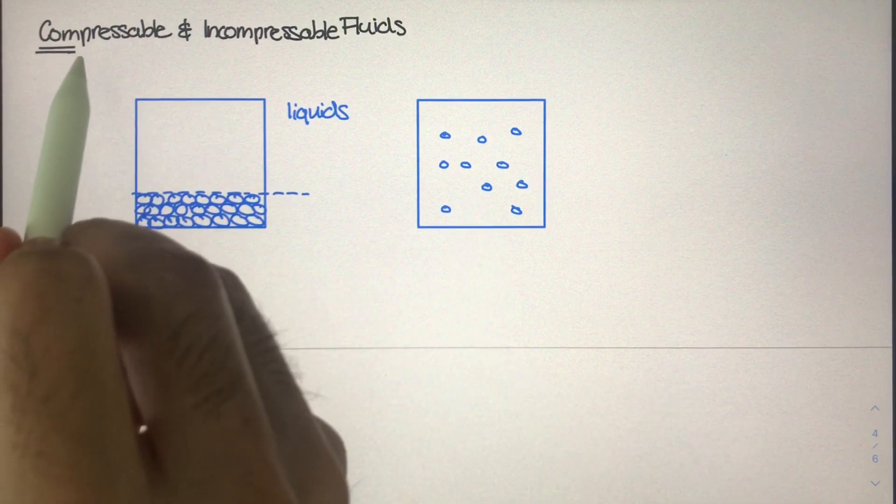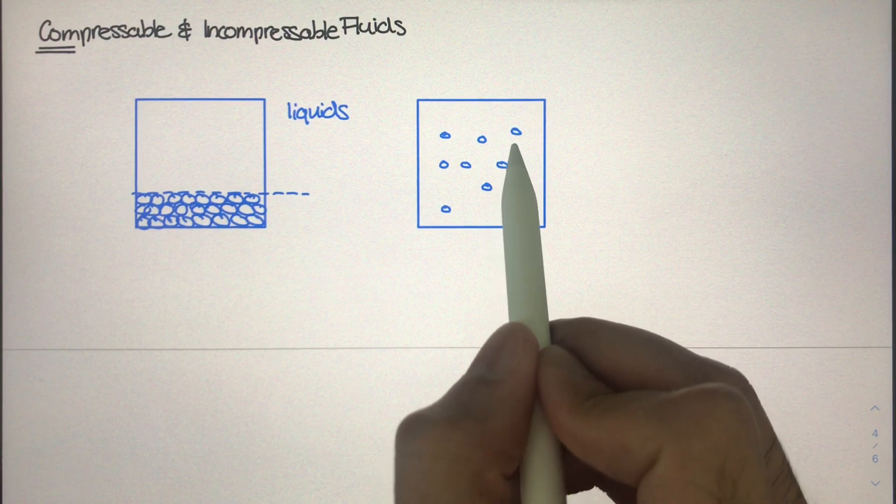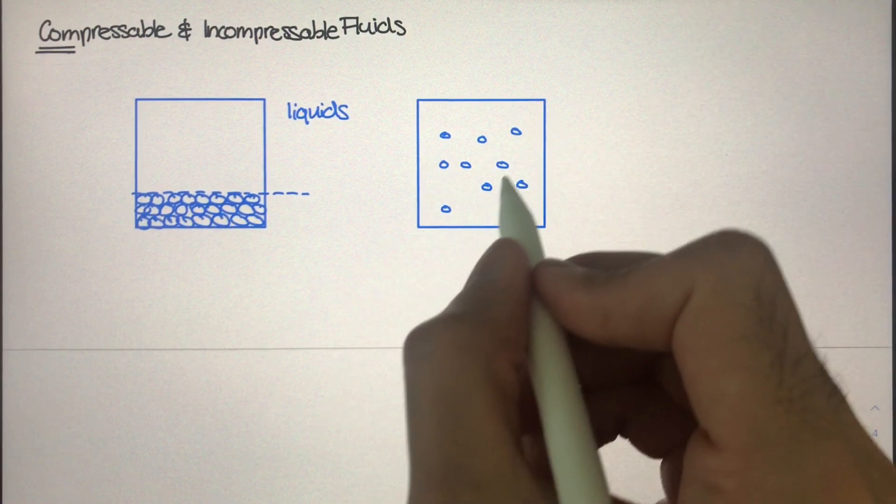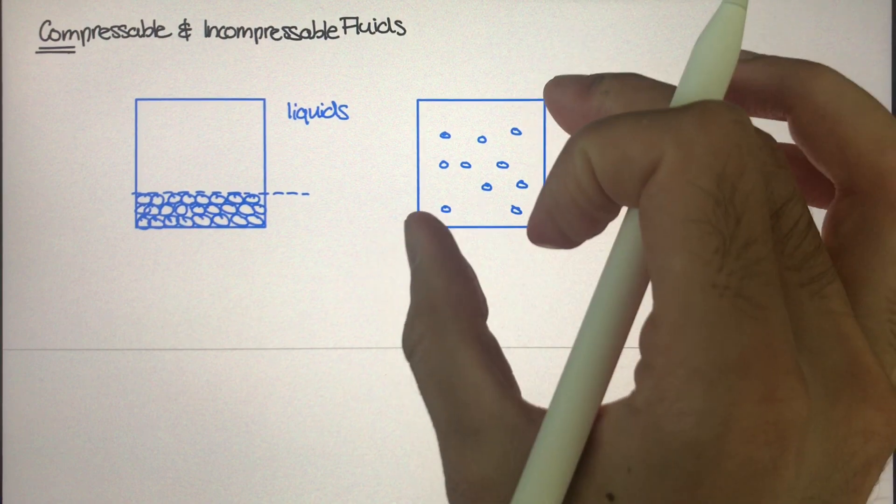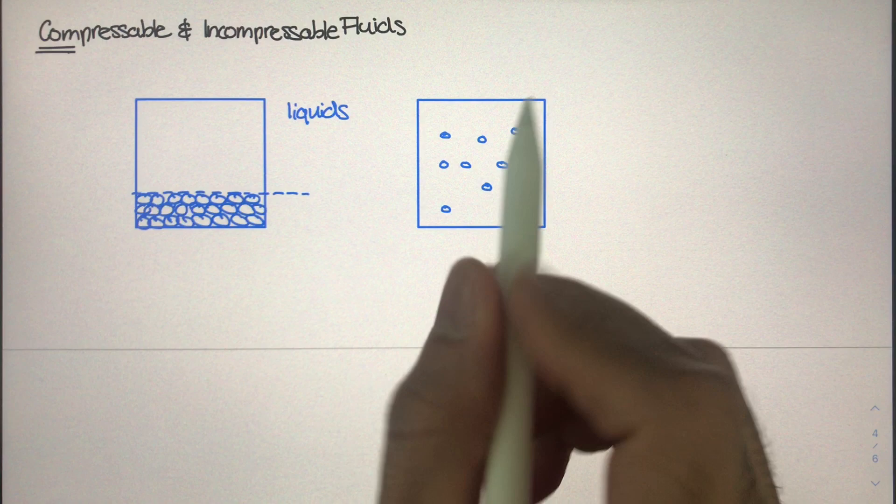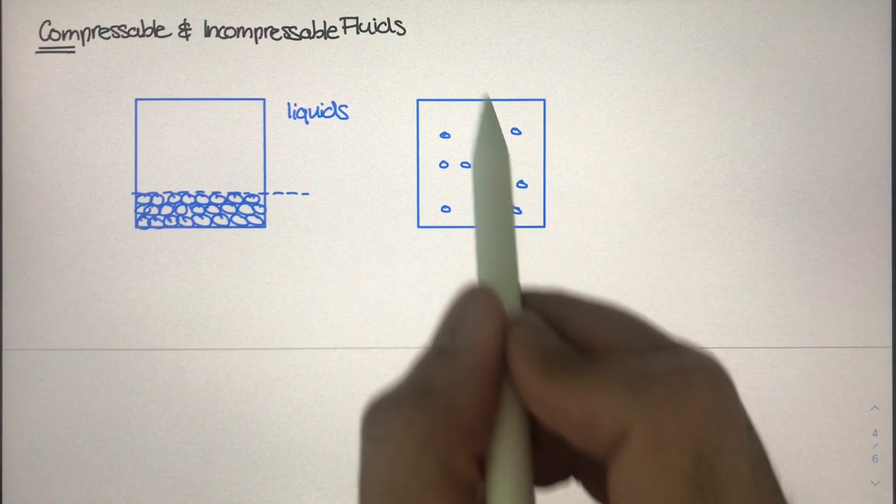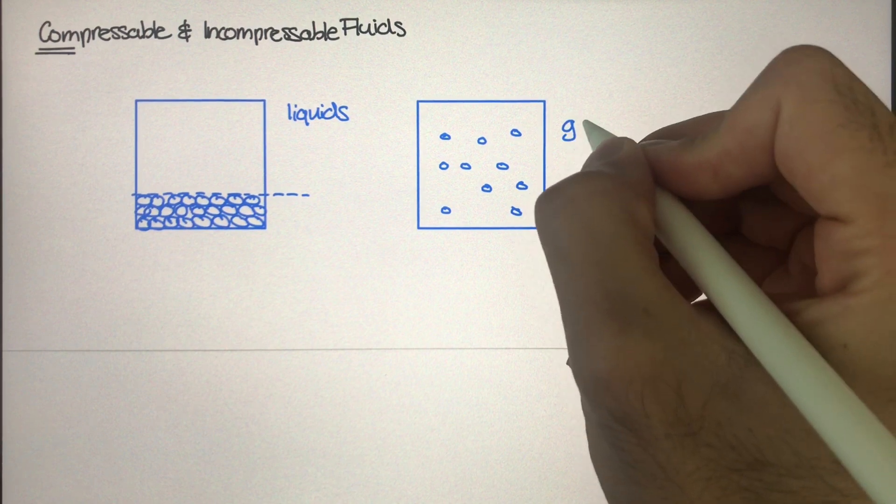And compressible just means that the space between the molecules can be shrunken. In other words, for a compressible fluid, we could actually squeeze the container and the space between each molecule will get smaller and smaller. So these types of fluids, compressible fluids, are often known as gases.